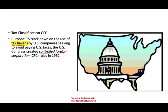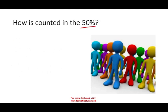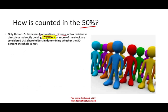So what is a Controlled Foreign Corporation? It is any corporation in which U.S. shareholders hold more than 50% of the voting power or the fair market value of the stock. If they control the company more than 50%, then this is a Controlled Foreign Corporation, a CFC. Now, how do we account for that 50%? Only those shareholders — whether a corporation, individual, or tax resident — who either directly or indirectly own 10% or more are counted. So if one individual owns 6%, another 12%, and another 15%, the 6% individual is not counted toward the 50% threshold.